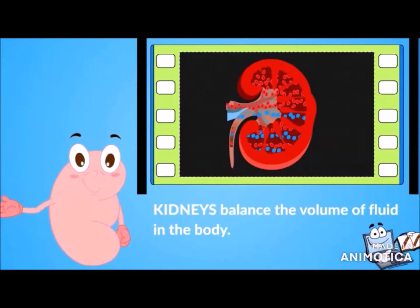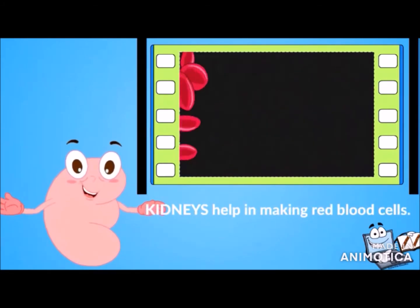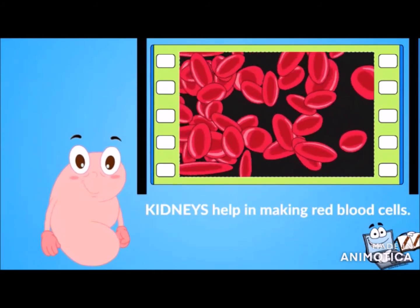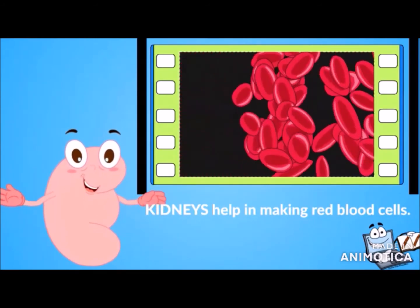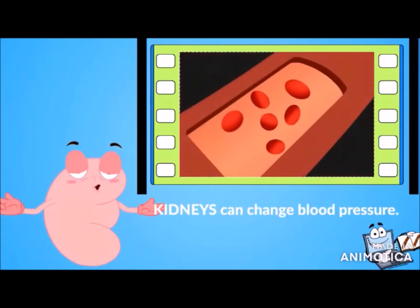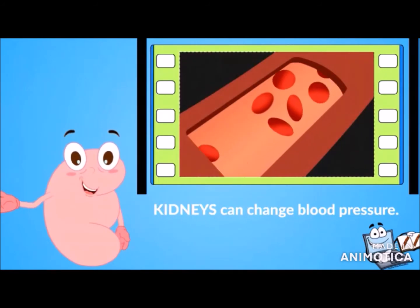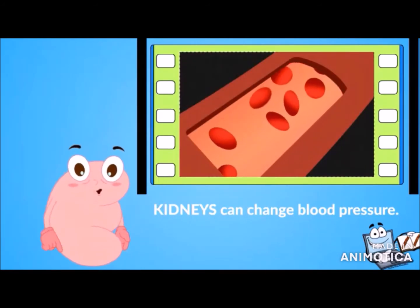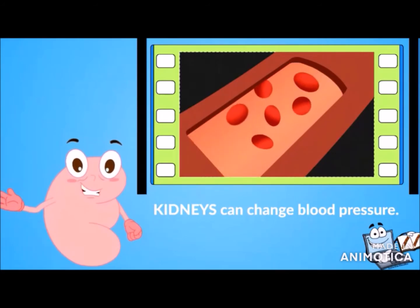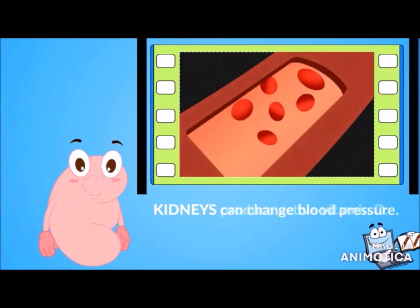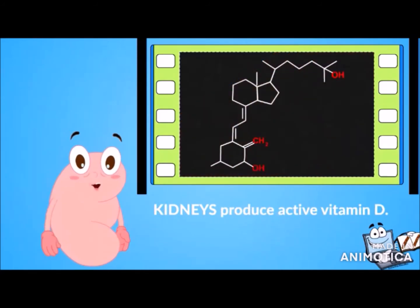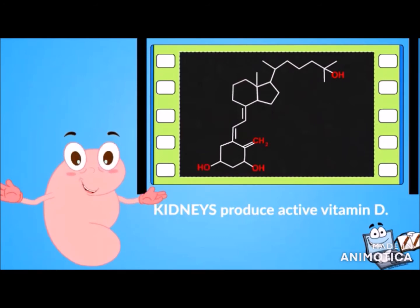Our blood gets filtered through the kidneys many times a day. If the volume of fluid in your body goes down, the kidneys will not make much urine until it goes back up. The kidneys also help in making red blood cells by producing a hormone that signals the body to produce more. Additionally, kidneys can change blood pressure by producing a hormone that constricts arteries, causing blood pressure to rise when higher pressure is needed.